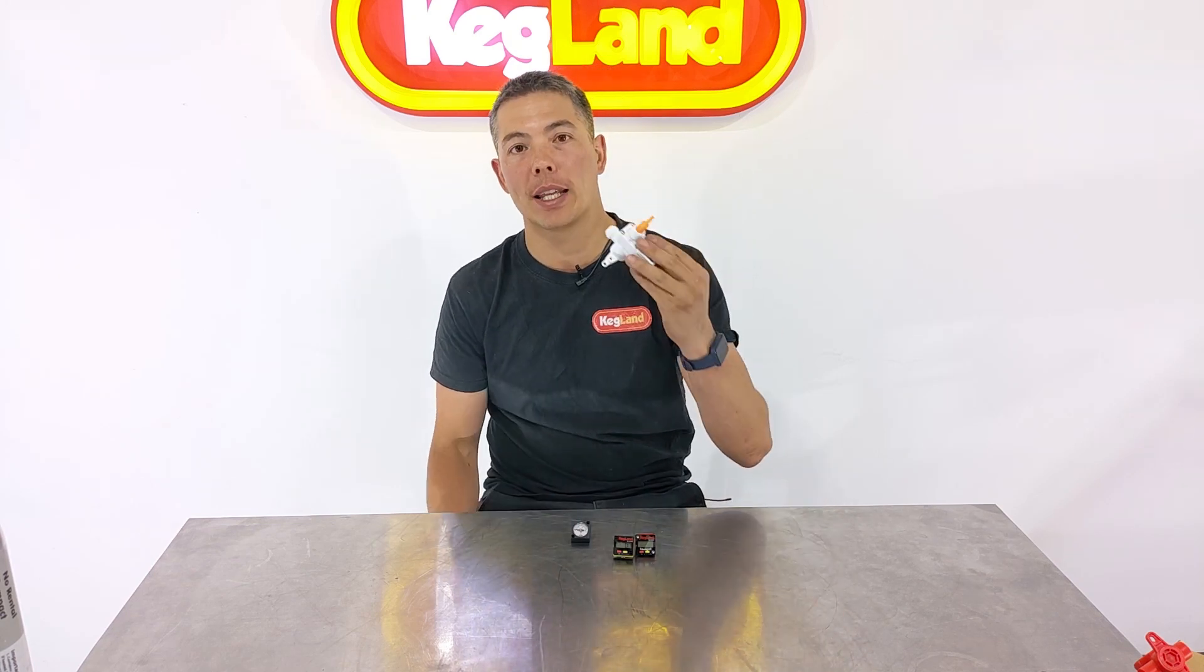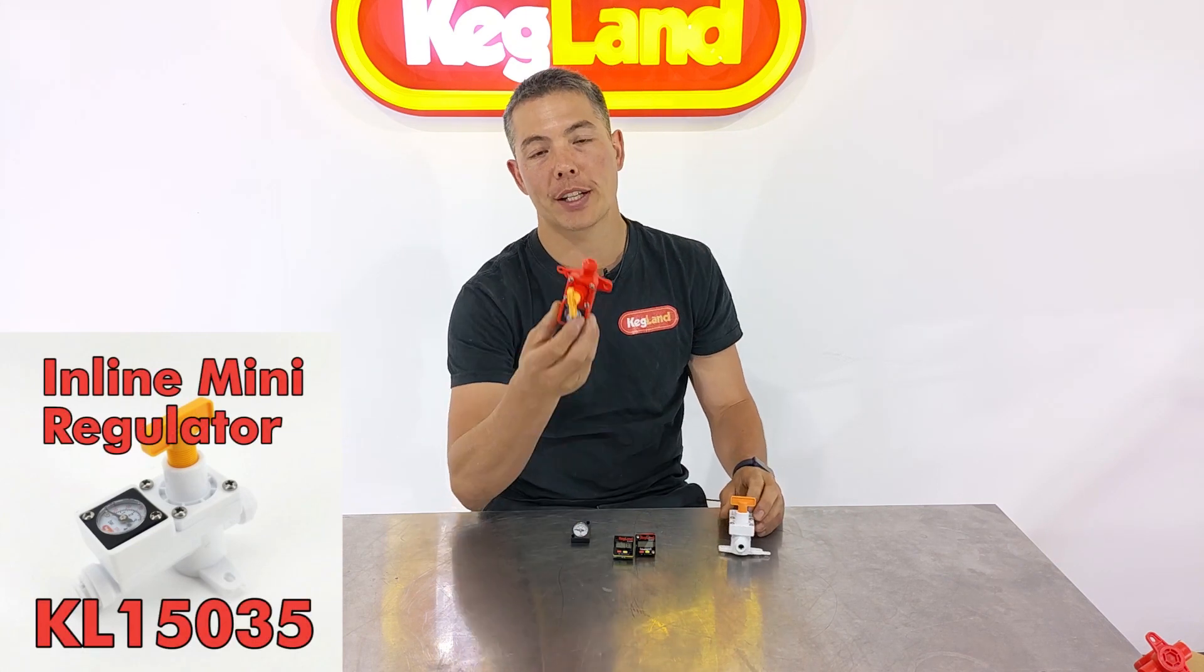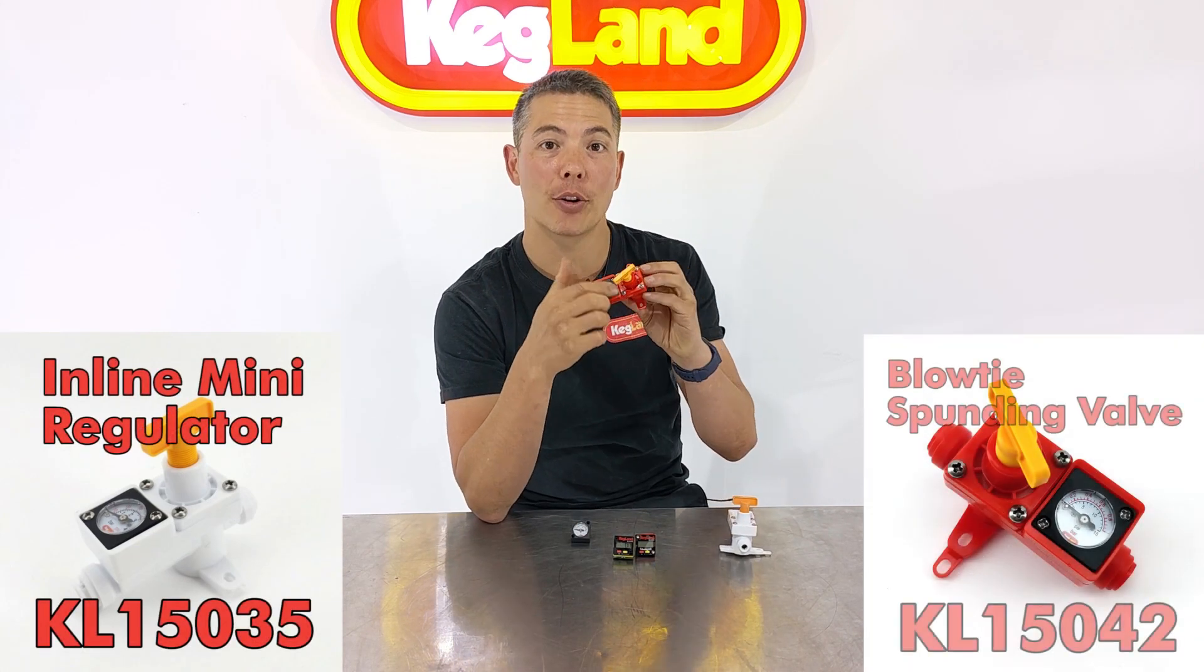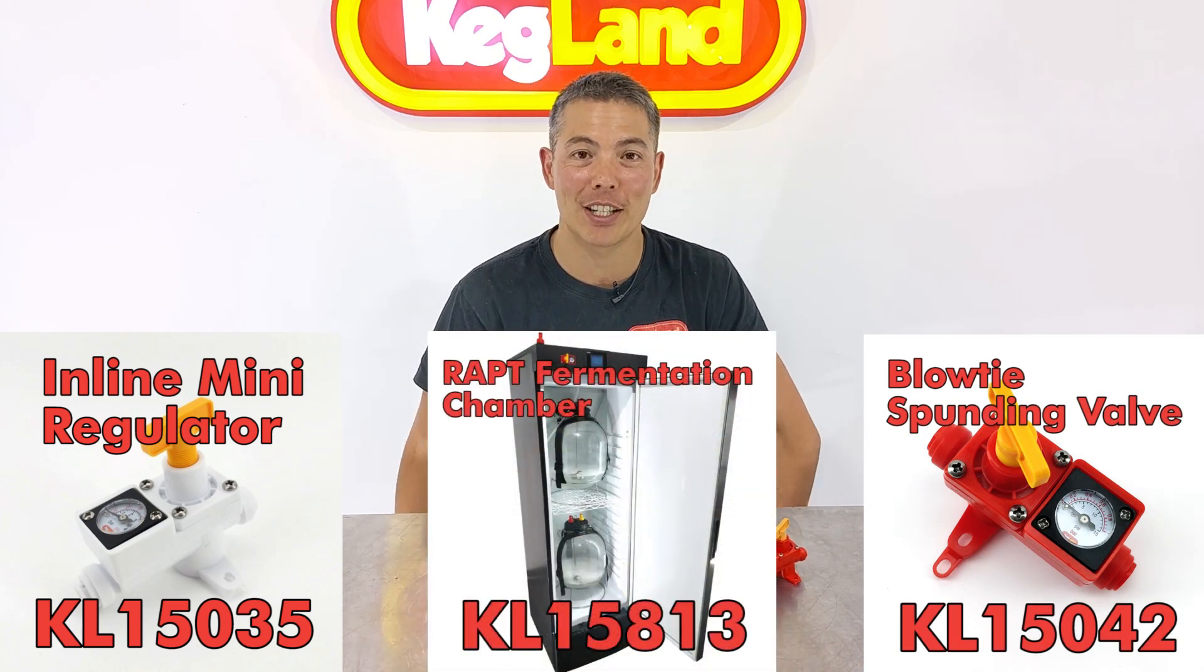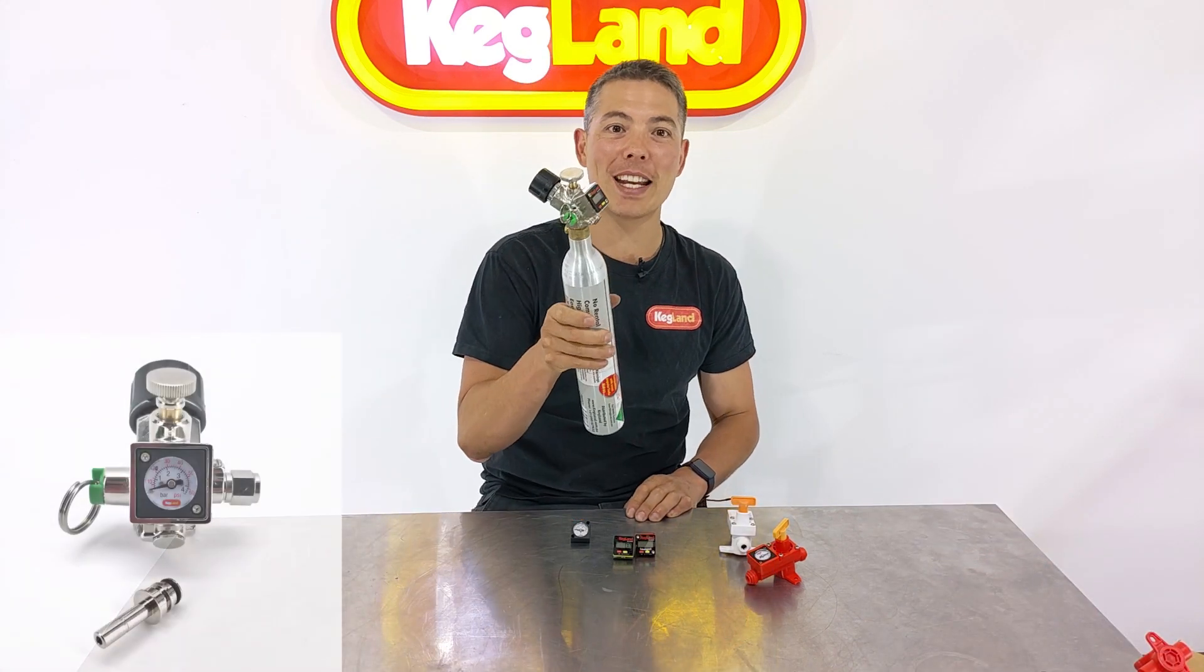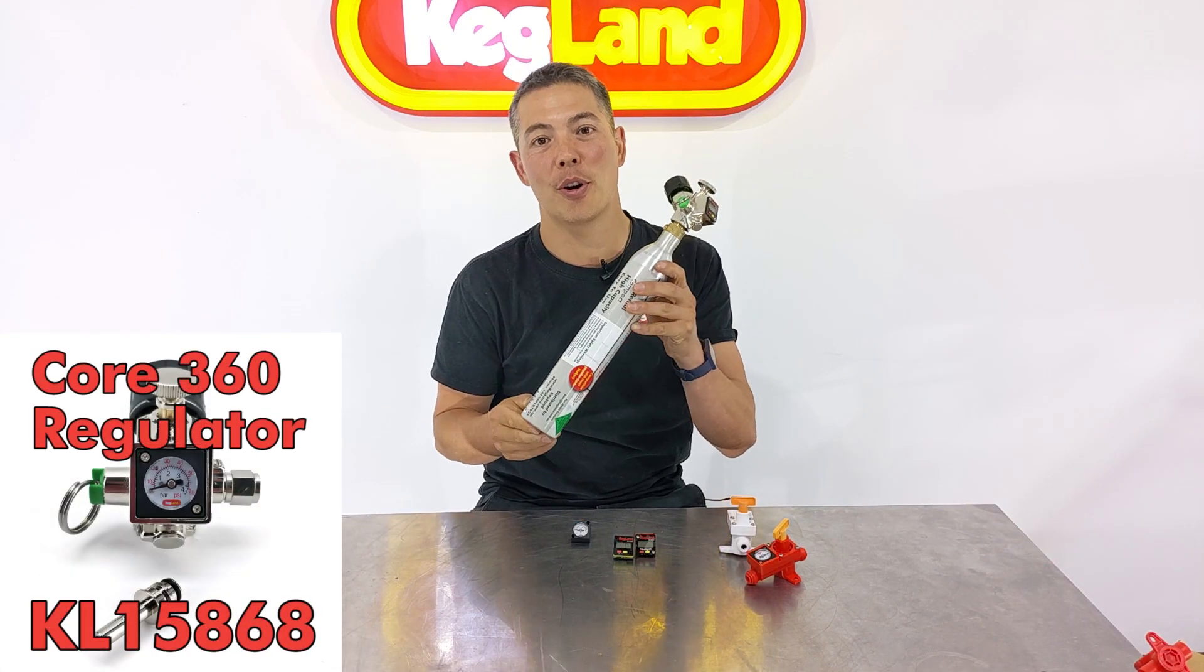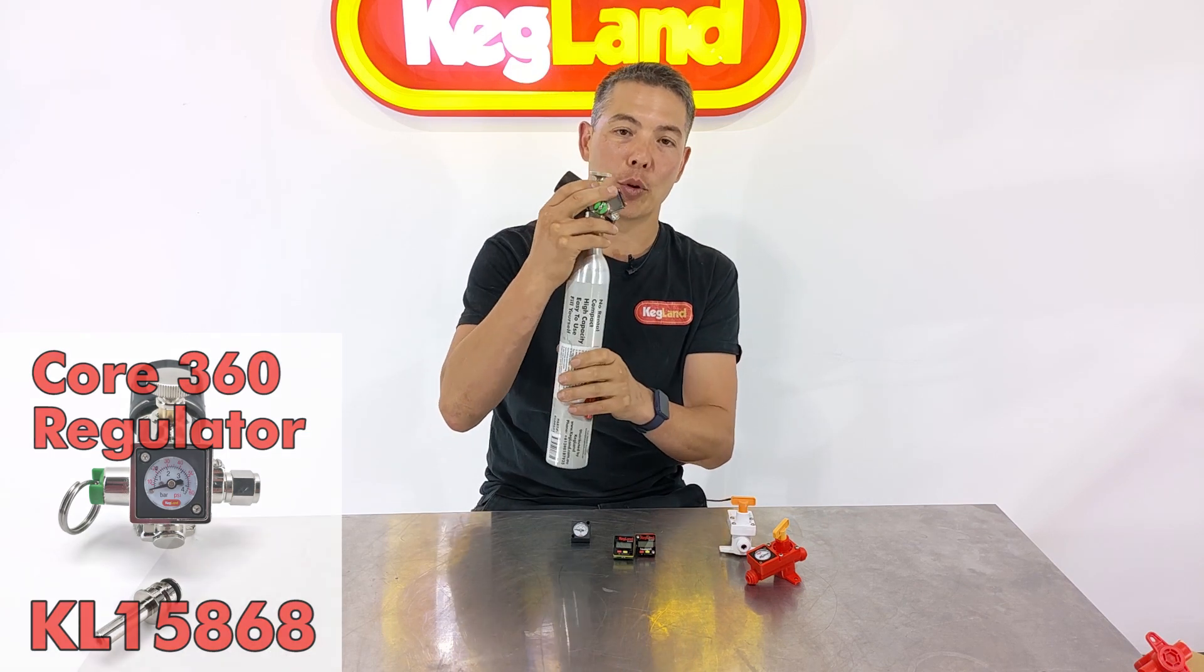Recently we brought out one of these inline regulators which use the little mini gauge, and we've also got things like the blowtie unit which has the integrated gauge. In the top of our wrapped fermentation chamber there's also mini gauges, and even in this little mini regulator which fits directly on top of a SodaStream cylinder. This is a really handy device called our Core360.